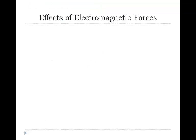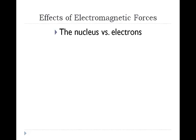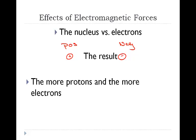Let's look at the effects of electromagnetic forces. The nucleus is positively charged while the electrons are negatively charged. The nucleus is made up of protons and neutrons — neutrons don't affect charge — and the electrons in the electron cloud are negative. As a result, they attract. The more protons and the more electrons there are, the stronger the forces pulling the electrons towards the nucleus.